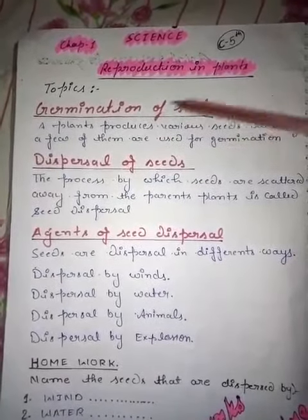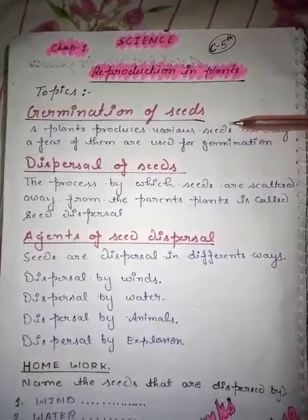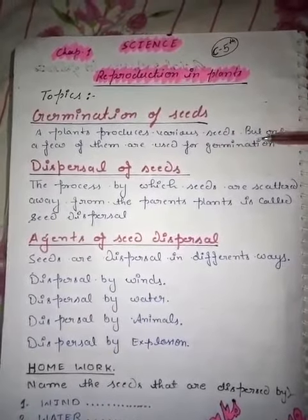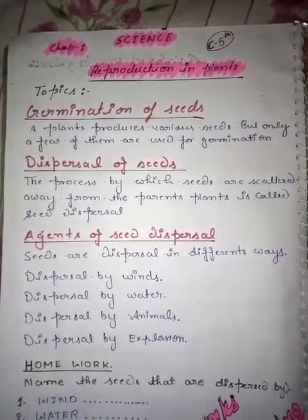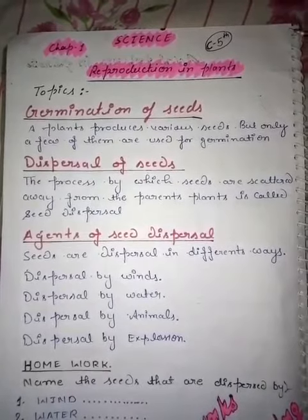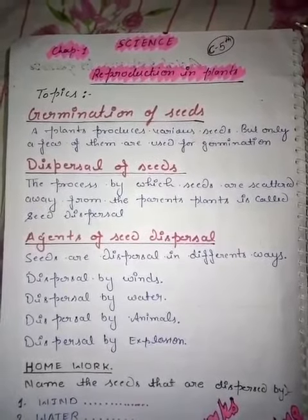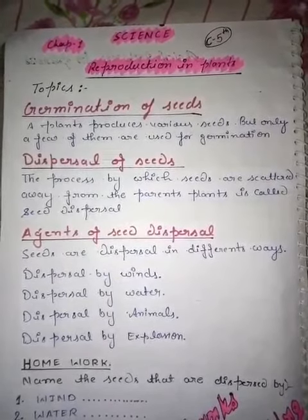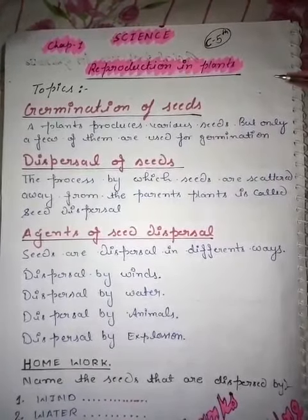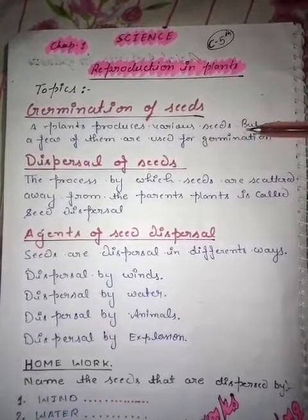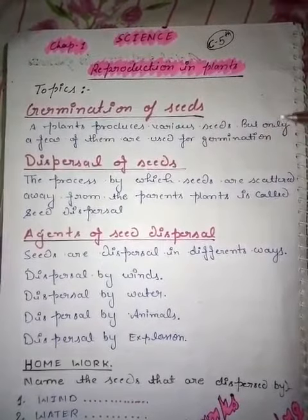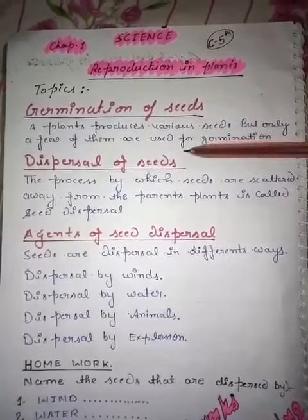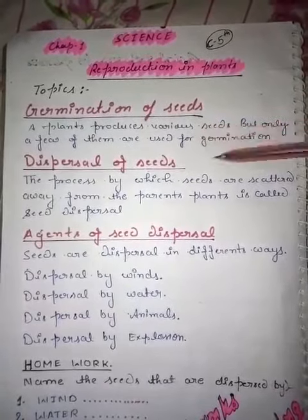Germination of seed. What is germination of seed? A plant produces various seeds but only a few of them are used for germination. During the process of germination, the seed absorbs water and the cells of the embryo start dividing. This results in the growth of a baby plant inside the seed. It comes out of the germinating seed and grows downward. Here we have our seeds germinate.